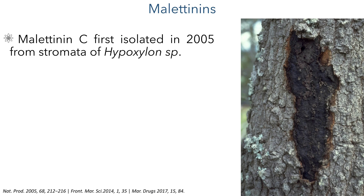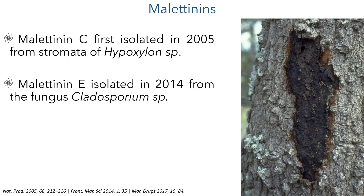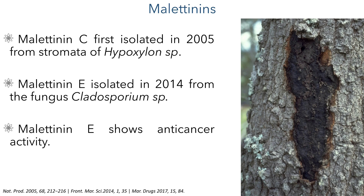Malatinin C was first isolated in 2005 from stromata of a hypoxylon fungus growing on dead aspen logs. Malatinin E, on the other hand, was isolated in 2014 from a cladosporium fungus. Initial studies into the properties of these compounds have shown that malatinin E has some anti-cancer activity, making it an attractive target for total synthesis.